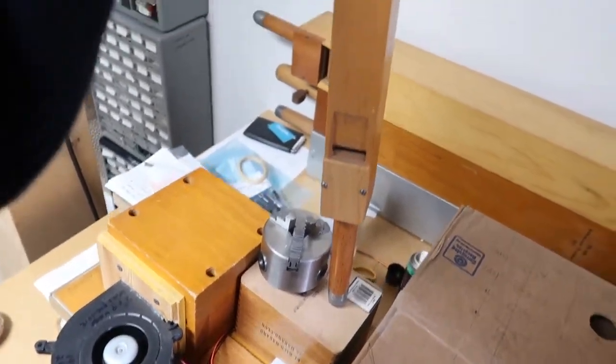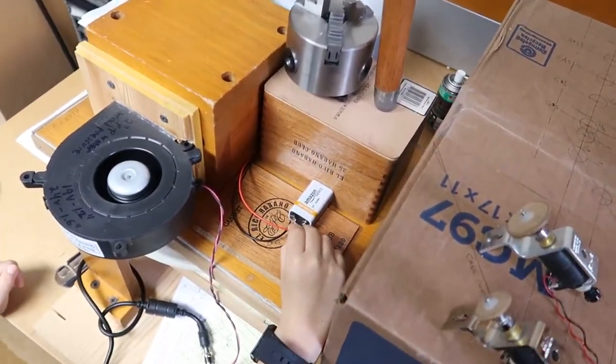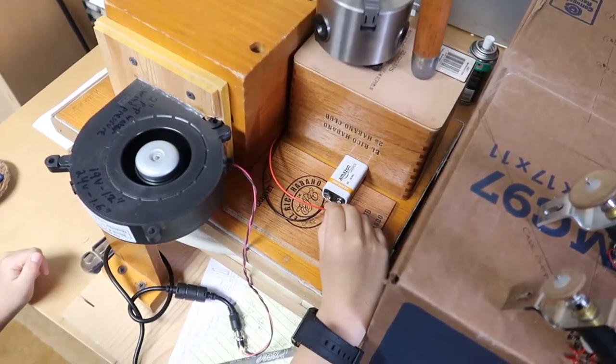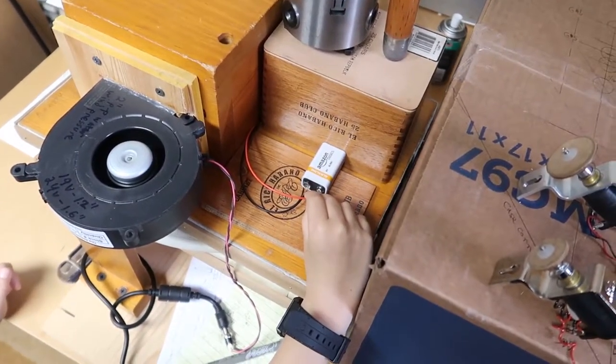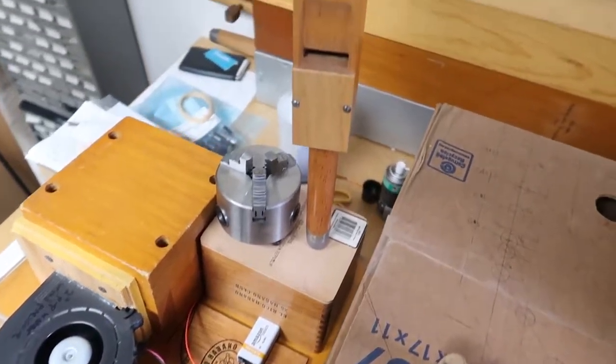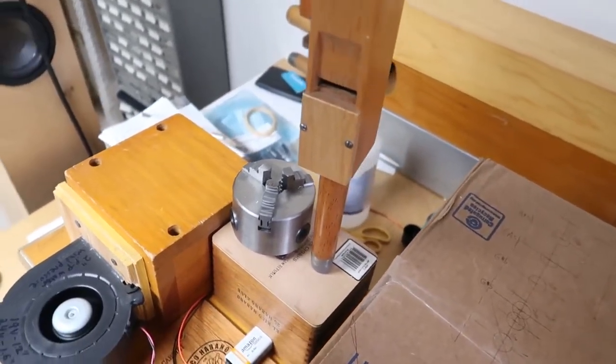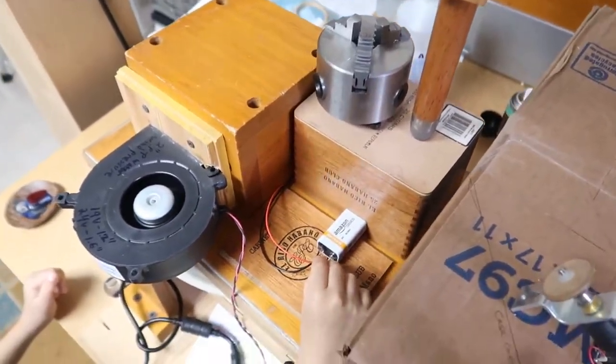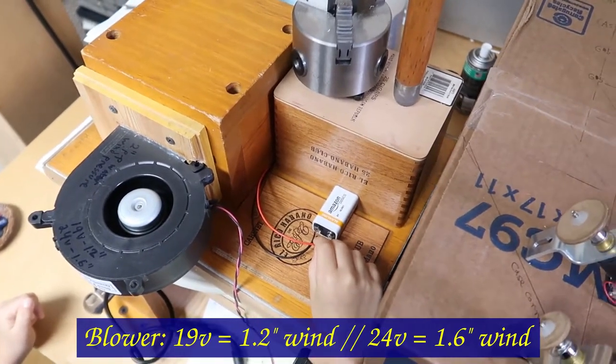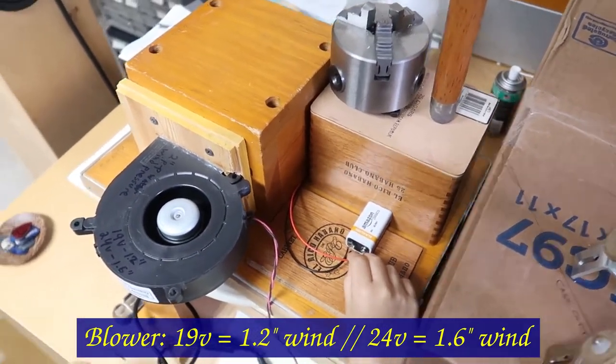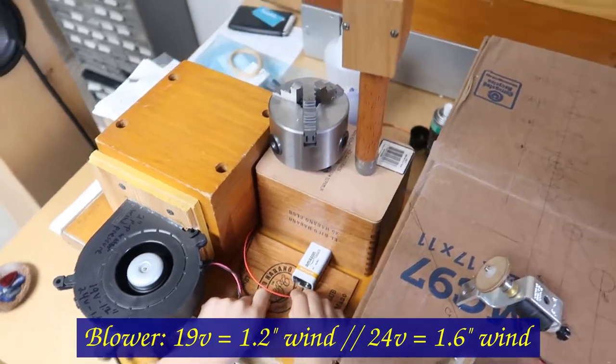So this is a pipe hooked up to the little bellows and we're activating the solenoid inside by touching it to a 9 volt battery. And it works. It works pretty well. It's running on 1.2 inches of wind right now at 19 volts. And we'll up that to 1.6 inches for the final thing.